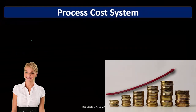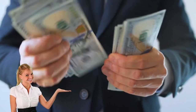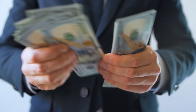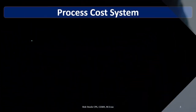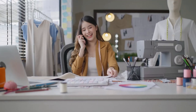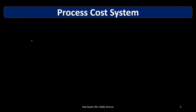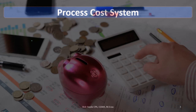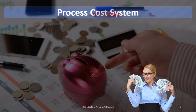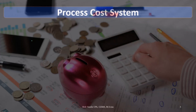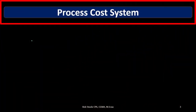Now, contrasting this to a process cost system: the idea is we apply costs to the process. The reason we can do that is because all the things we make are essentially the same. Rather than something being customized, here everything is what it is — you get what you get. We apply costs evenly to the units by assigning them as they go through the process, rather than to particular jobs.